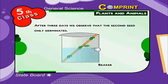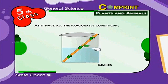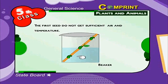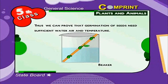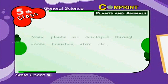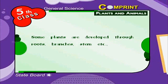After three days, we observe that the second seed only germinates as it has all the favorable conditions. The first seed doesn't get sufficient air and temperature. The third seed doesn't get water for its use. Thus, we can prove that germination of seeds needs sufficient water, air and temperature.